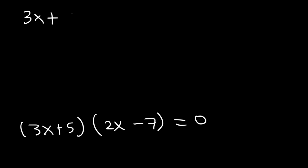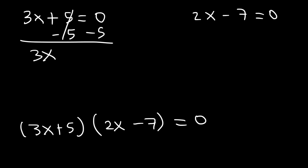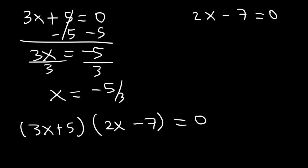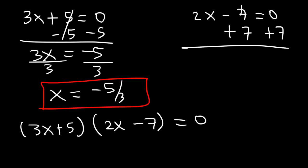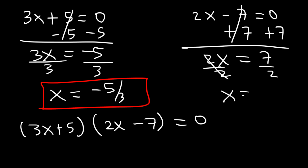Now set 3x plus 5 equal to zero and 2x minus 7 equal to zero. Subtracting 5 gives 3x equals negative 5, then divide by 3, so the first answer is x equals negative 5 over 3. For the second factor, add 7 to get 2x equals 7, then divide by 2, so x equals positive 7 over 2. Now you know how to solve quadratic equations by factoring. Thanks for watching — we'll see you next time.